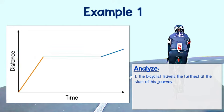And take a look at this horizontal line. I see that time keeps going, but he hasn't traveled anywhere. This means that the bicyclist was stopped, perhaps taking a break.